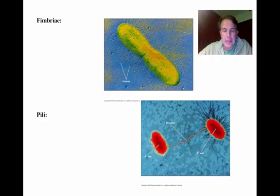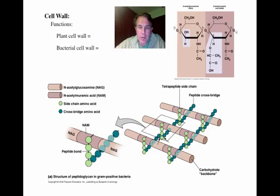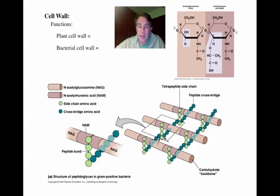Next we're going to move on to the cell wall of the bacterial cell. It's actually a complex, semi-rigid structure that is responsible for the shape of the cell. The major function of the cell wall is to prevent the cell from rupturing due to osmotic pressure. You may remember from your earlier biology experience that plant cell walls serve a similar function — rigidity and osmotic pressure resistance — but they're made up of repeating glucose molecules that make up a molecule called cellulose.